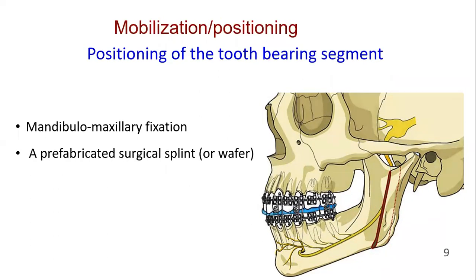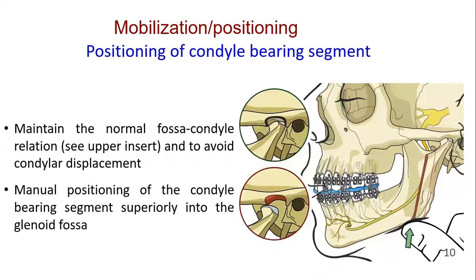Mandibular-maxillary fixation is performed to position the large tooth-bearing segment to the desired relationship with the maxilla. A prefabricated surgical splint or wafer may be used to facilitate this. Care must be taken to maintain the normal fossa-condylar relation and to avoid condylar displacement.